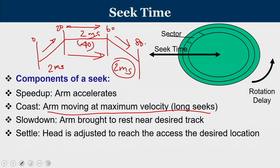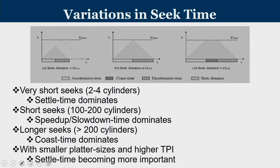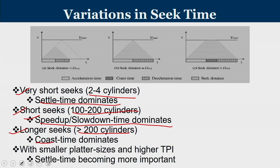After the arm stops, the head is adjusted to reach the desired location — this is settle time. For very short seeks (within 2 to 4 cylinders), settle time dominates. For short seeks (up to 100–200 cylinders), speed-up and slow-down time dominate. For long seeks (more than 200 cylinders), the cost phase dominates. With smaller platter sizes and higher tracks per inch, settle time becomes more important because tracks are closely packed and locating the correct cylinder with high precision takes more time.